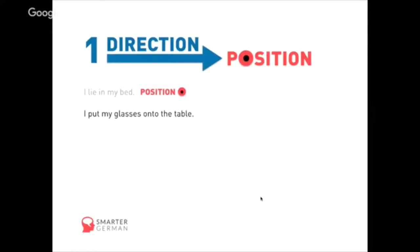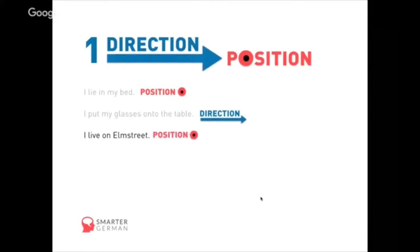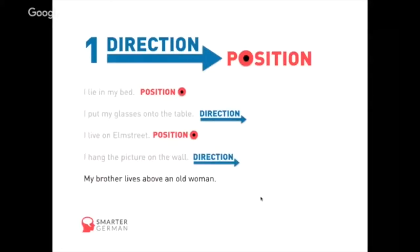'I live on Elm Street' — that's a position. 'Hang the picture on the wall' — you move your arms towards the wall, so it's a direction. 'A brother lives above an old woman' — his flat doesn't move, so it's a position. 'I stick my finger in my nose' — are you moving it towards your nose or is it stuck there already? That's a direction.